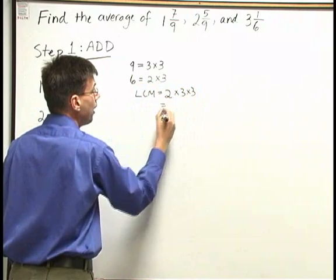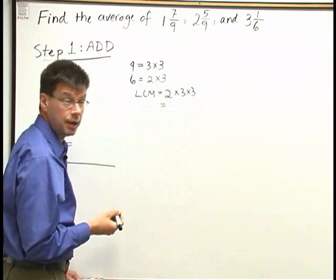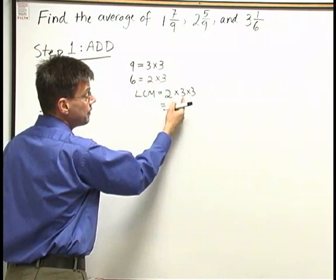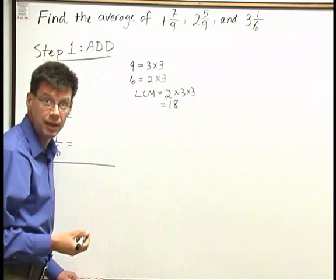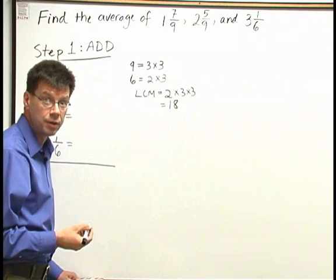And now I'll multiply two times three times three together, two times three is six, times three is eighteen. There's my LCM, that's the common denominator that I'm going to use.